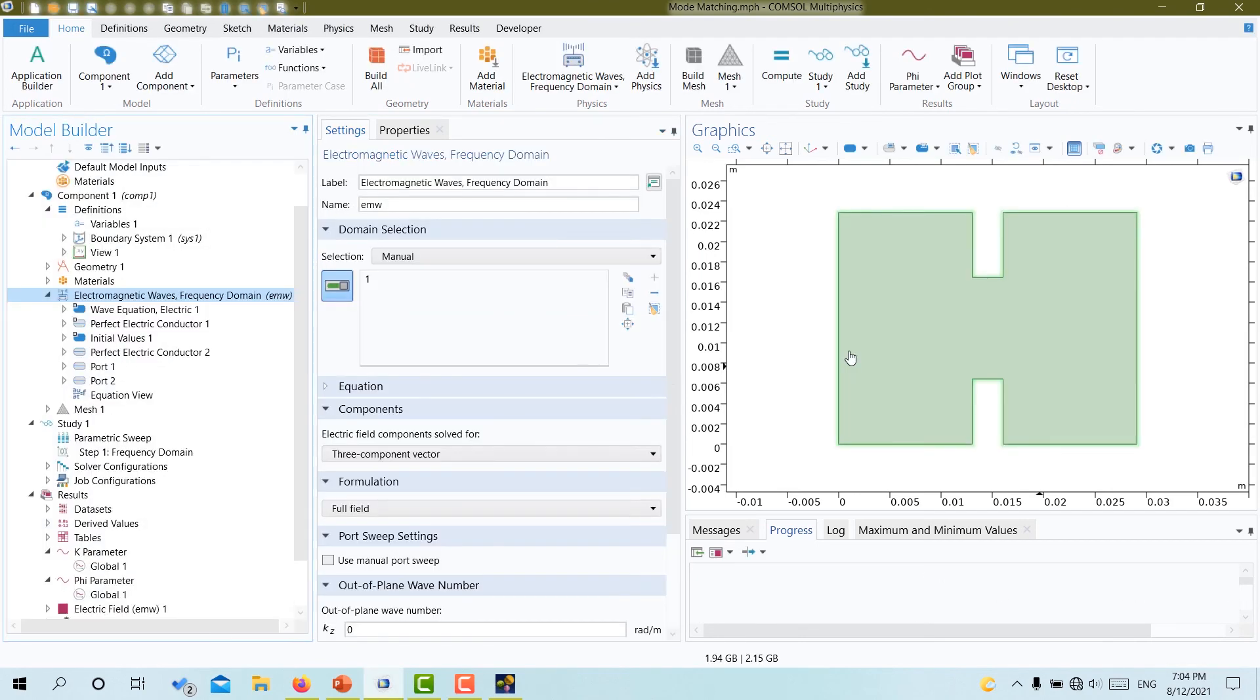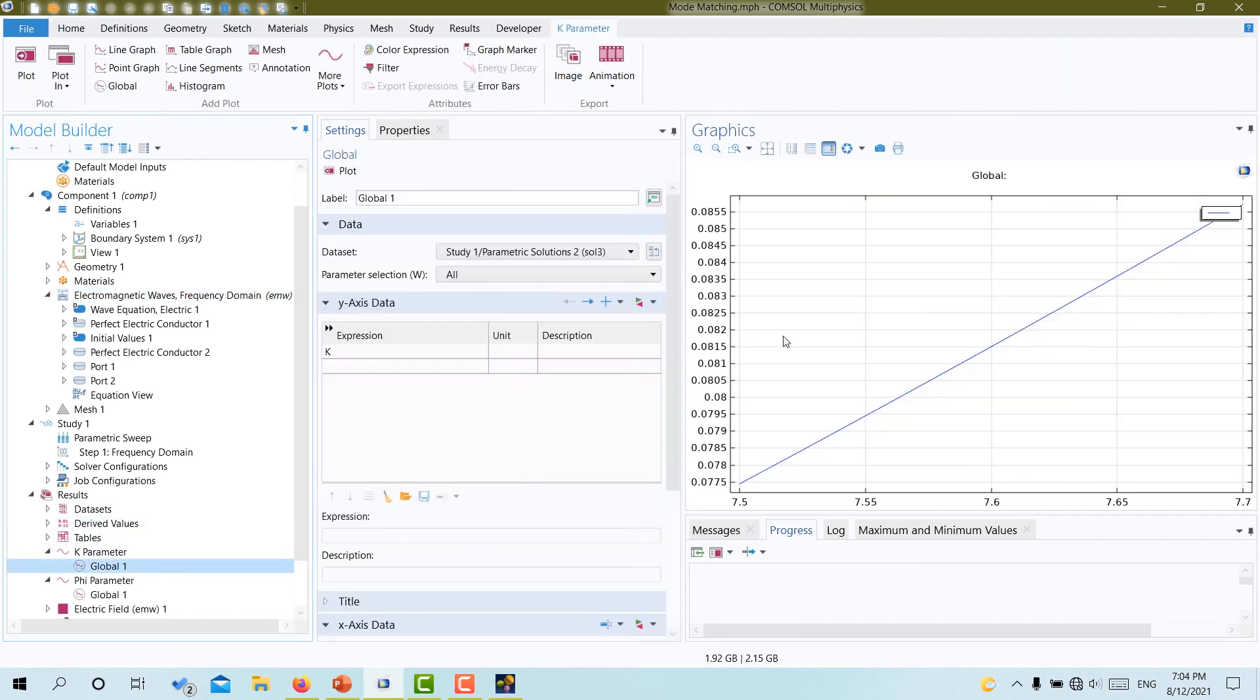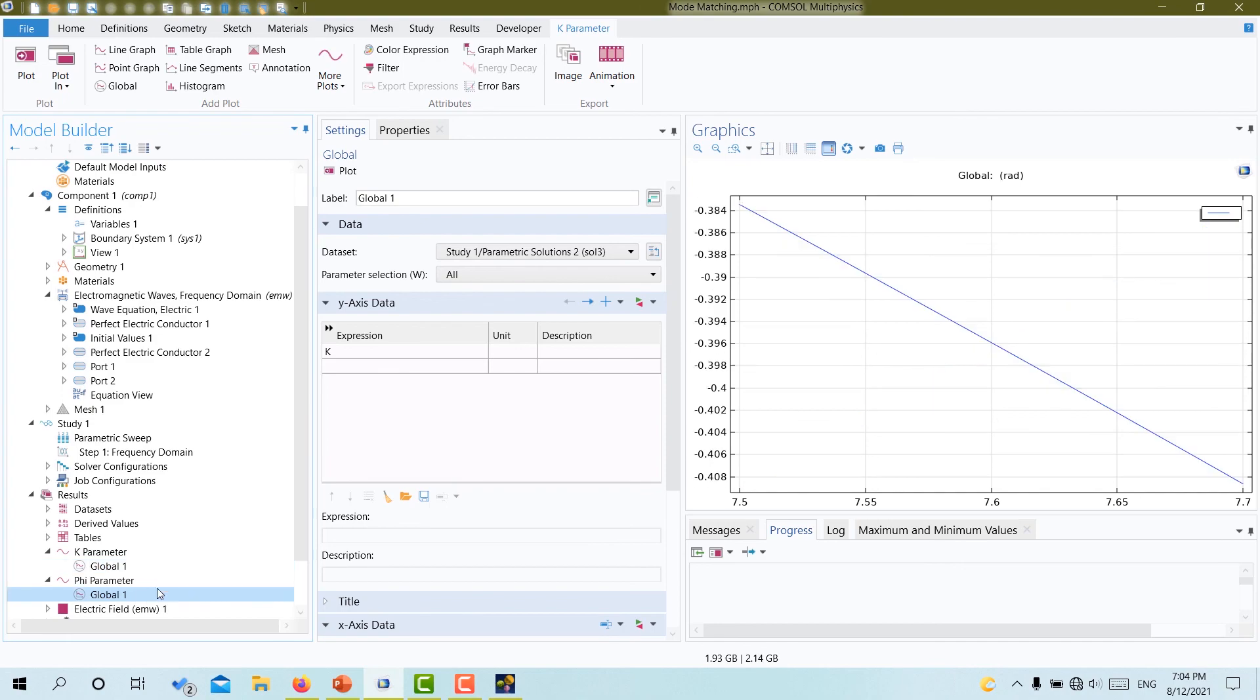In the results section, I add a 1D plot group and then global plot to plot the K curve versus the iris widths. Using this plot, we can determine the iris widths due to the calculated K parameter from the mentioned equations. This process is repeated to find the associated φ value.